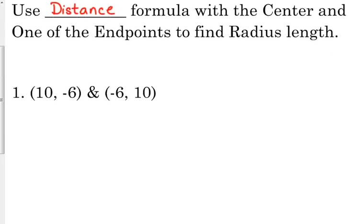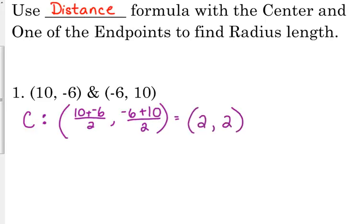Let's look at example 1 there on your paper. Your points are (10, -6) and (-6, 10). We start with the midpoint because that's going to give us the center, so I'm going to label it with C. So 10 plus negative 6 over 2, negative 6 plus 10 over 2. We're going to get the same point for the x and the y. That's 4 divided by 2, so that's 2, 2 is our center.